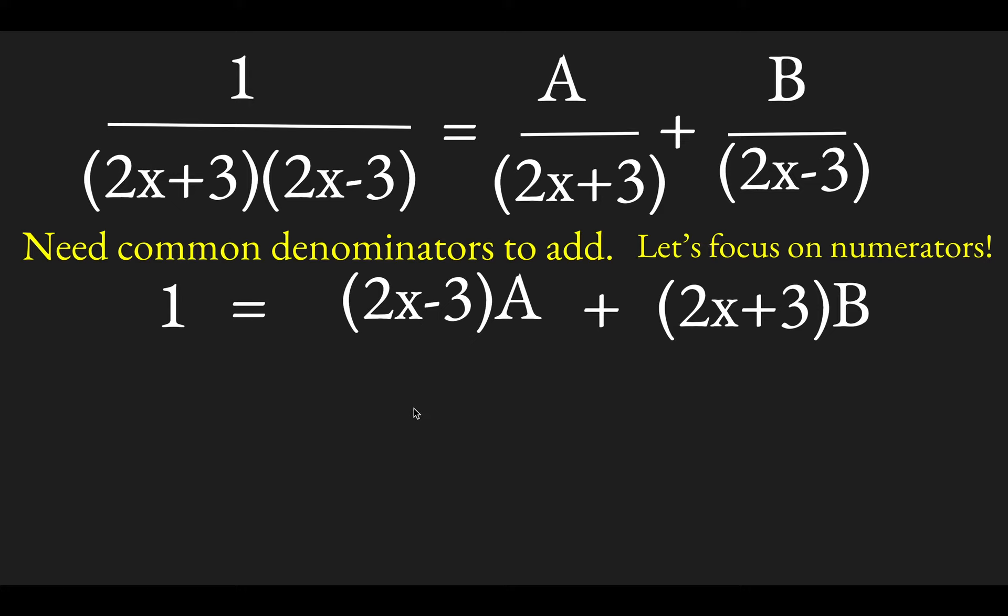So now let's see what happens if we multiply this out. So you have 1 on the left. We'll multiply the a times 2x minus 3, and we'll multiply the b times 2x plus 3.